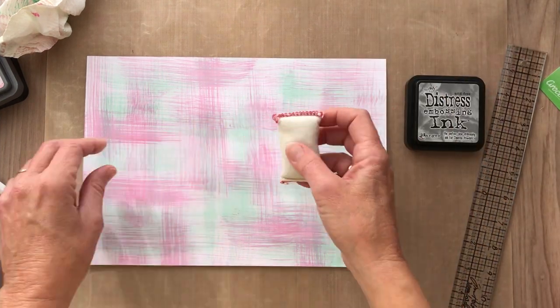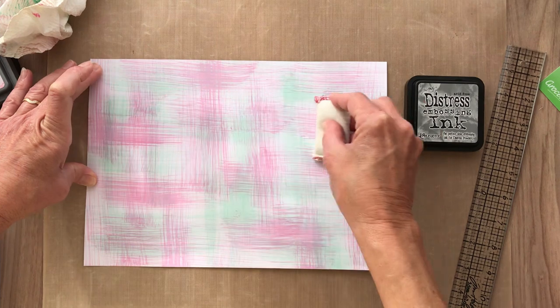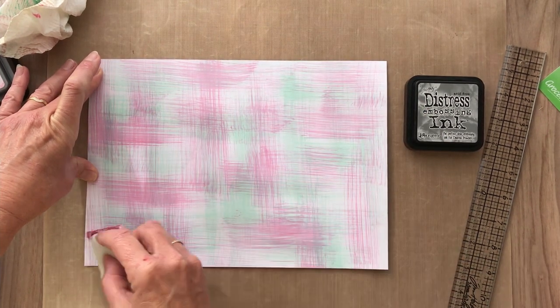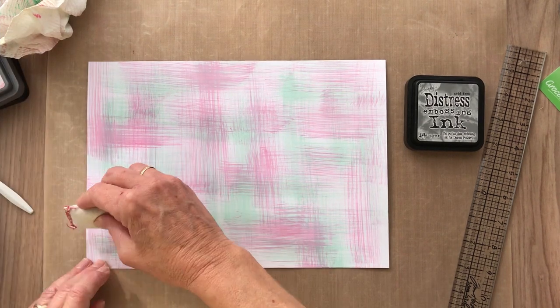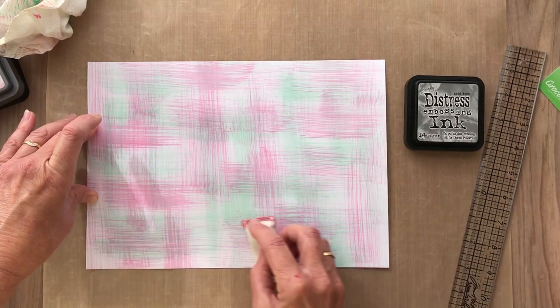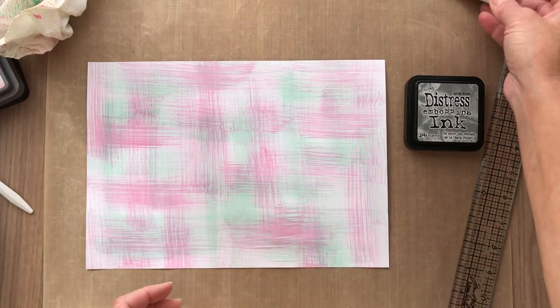I want to take my little anti-static pillow first and just wipe it across the surface just like this. That's to stop my embossing powder sticking where I don't want it to.